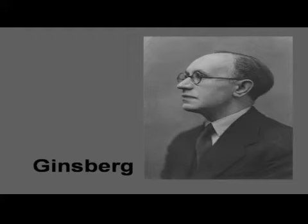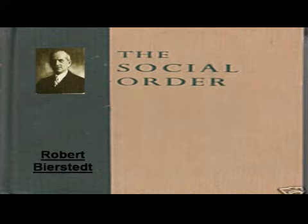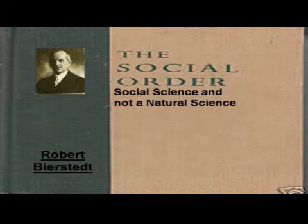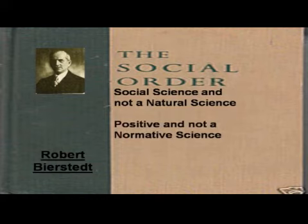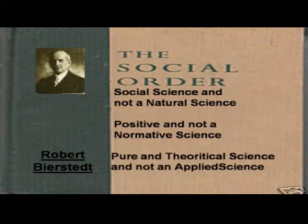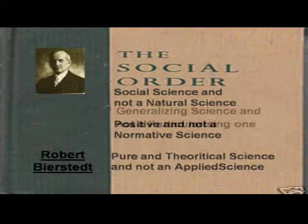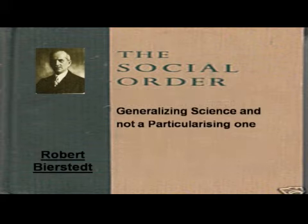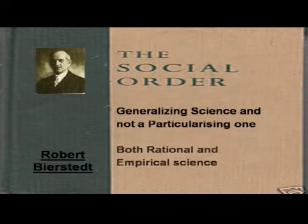The frequent criticism that sociology cannot generalize is not accepted by Ginzburg, who gives six types of generalization in social sciences, like empirical correlation. Robert Bierstadt in his book Social Order has given five characteristic features of sociology: sociology is a social science and not a natural science; it is a positive and not a normative science; it is a pure or theoretical science and not an applied science; it is a generalizing science and not a particularizing one; and it is both a rational and an empirical science.